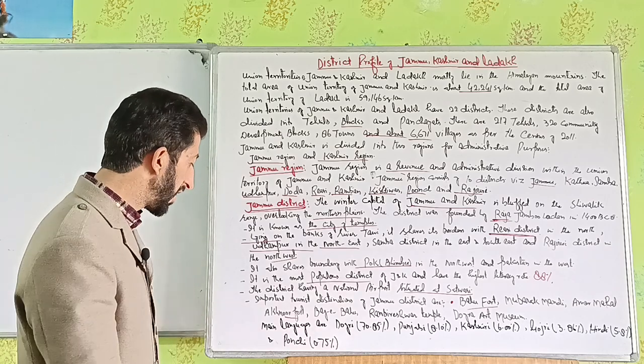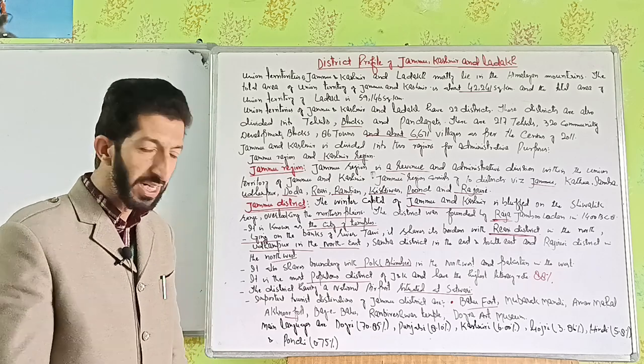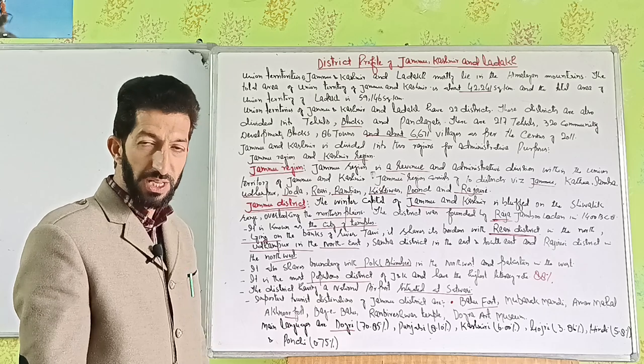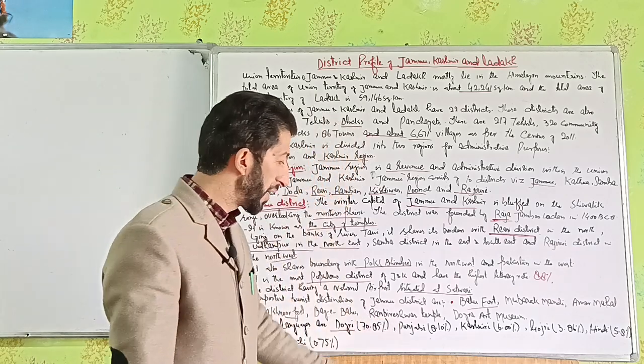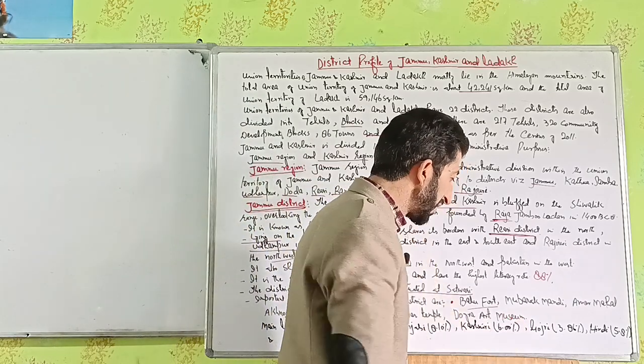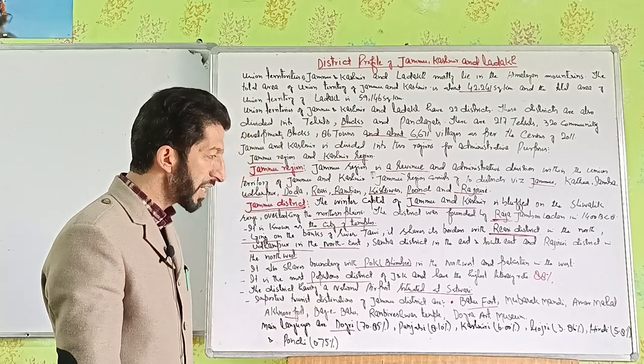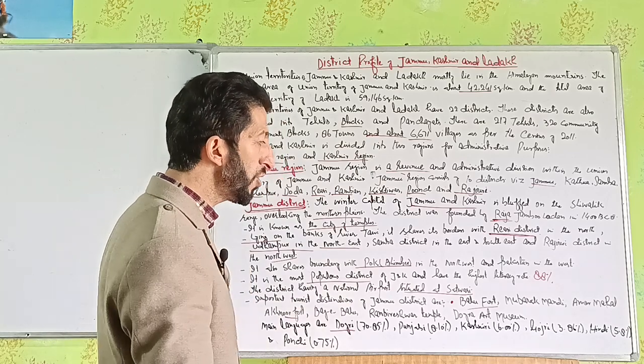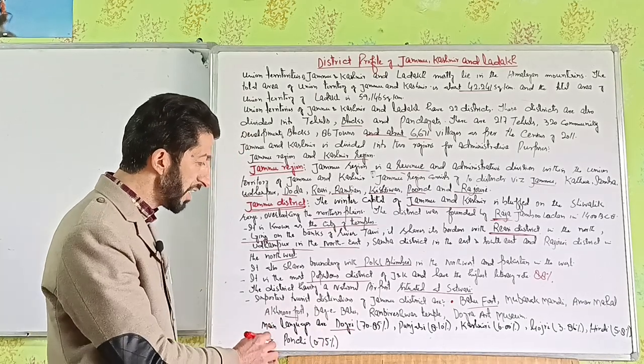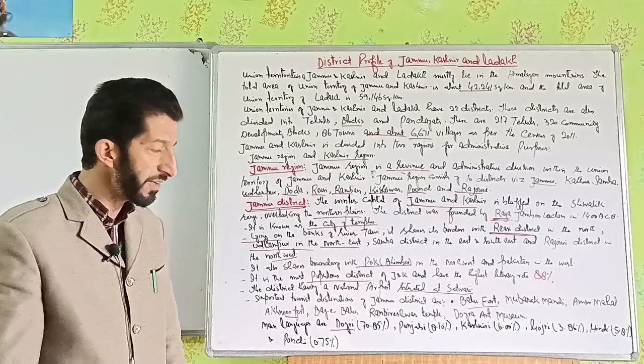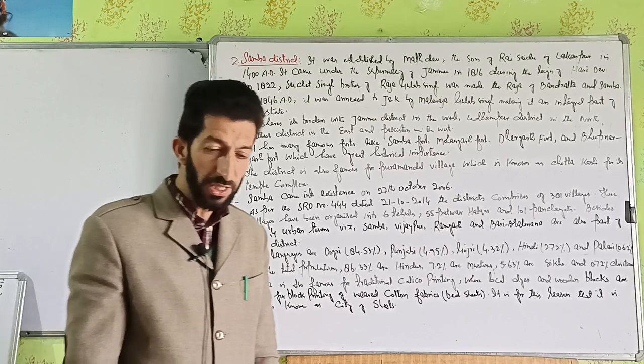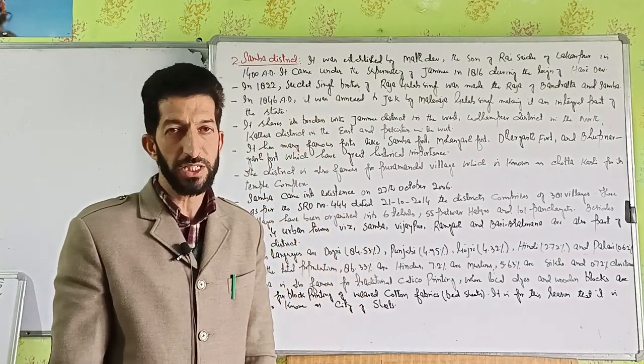The main languages spoken in Jammu district are: Dogri 70.85 percent, Punjabi 8.10 percent, Kashmiri 6 percent, Gojri 3.86 percent, Hindi 5.8 percent, and Pahari 0.75 percent.